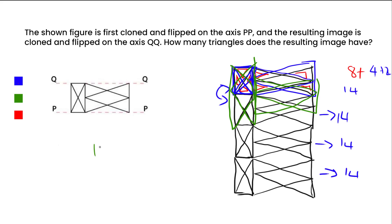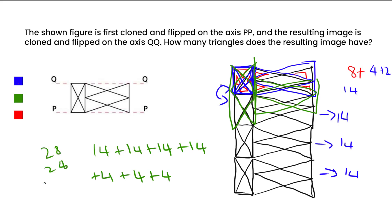Now we calculate the total: fourteen plus fourteen is twenty-eight, plus twenty-eight is fifty-six, plus twenty-eight more is... wait — fourteen times four is fifty-six, plus eight integration triangles gives sixty-four... actually: twenty-eight plus twenty-eight is fifty-six, plus eight is sixty-four — no, the answer comes to sixty-eight. So the answer is 68.